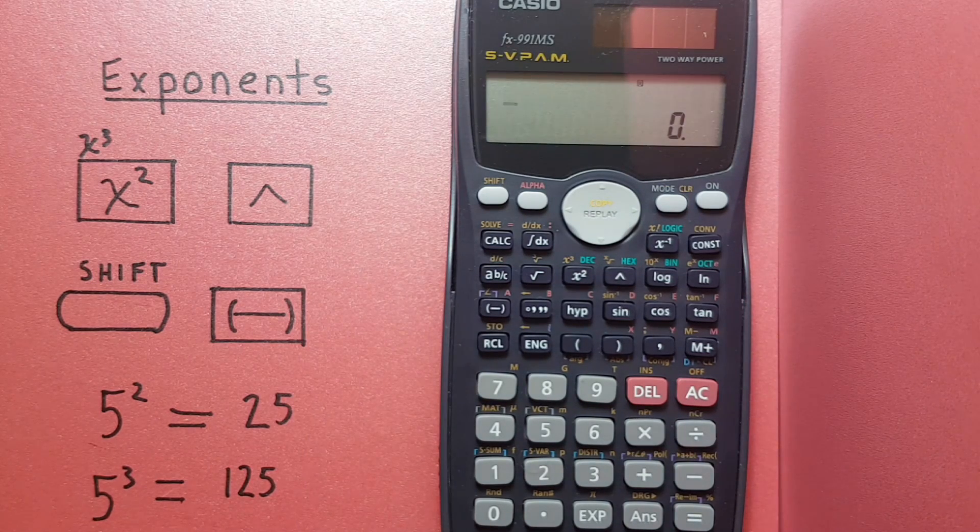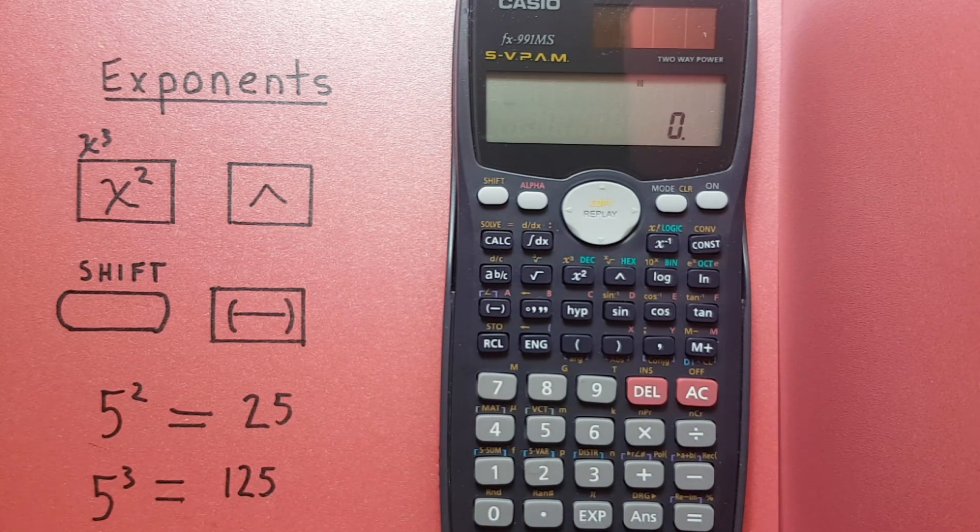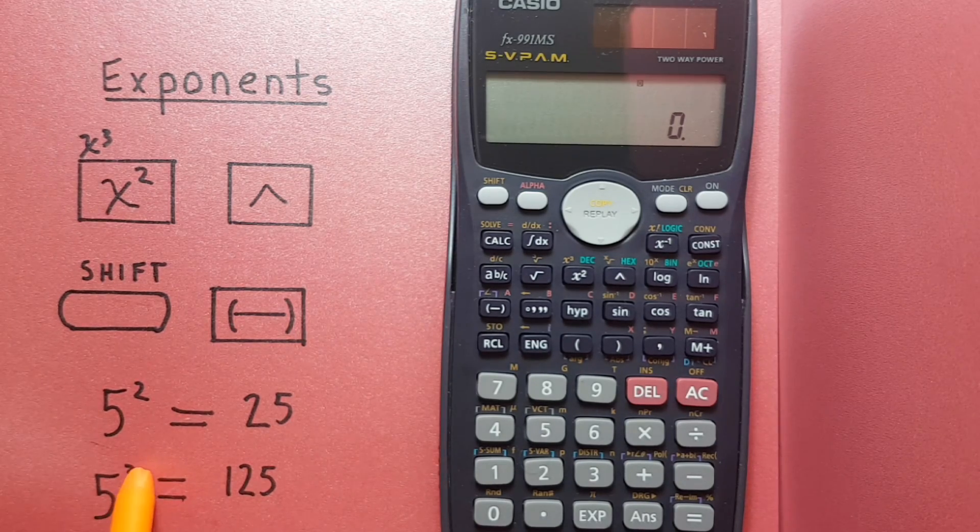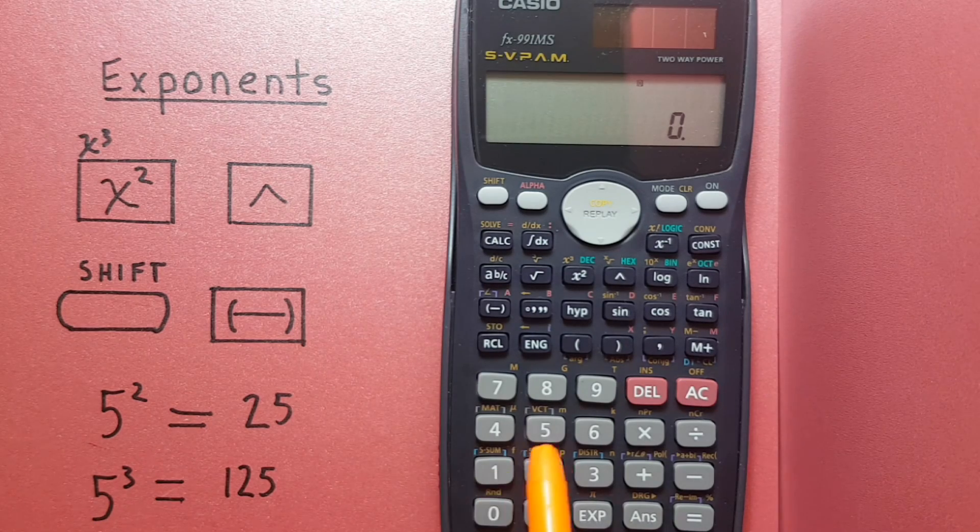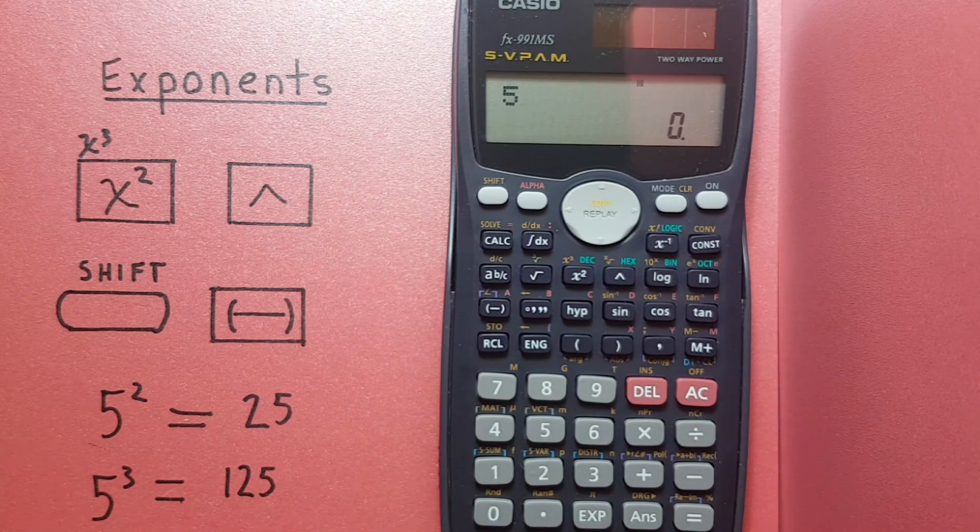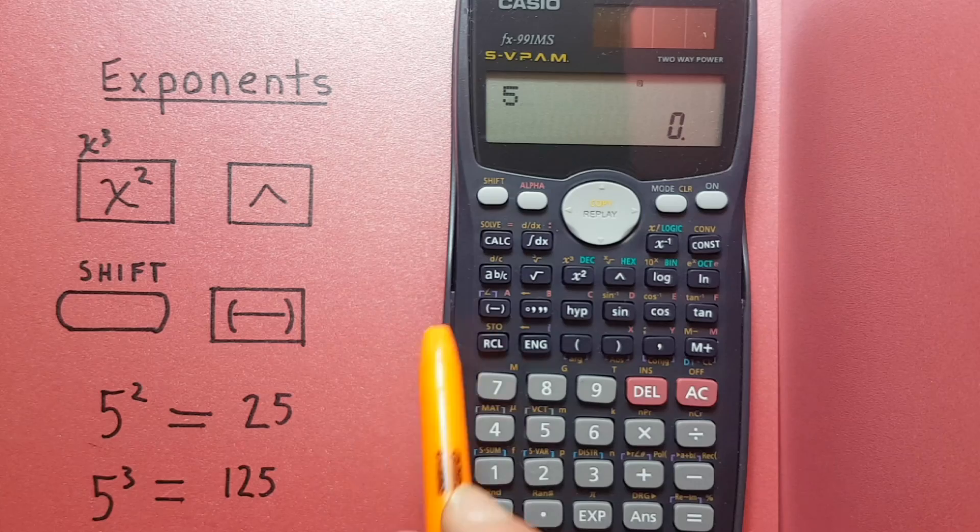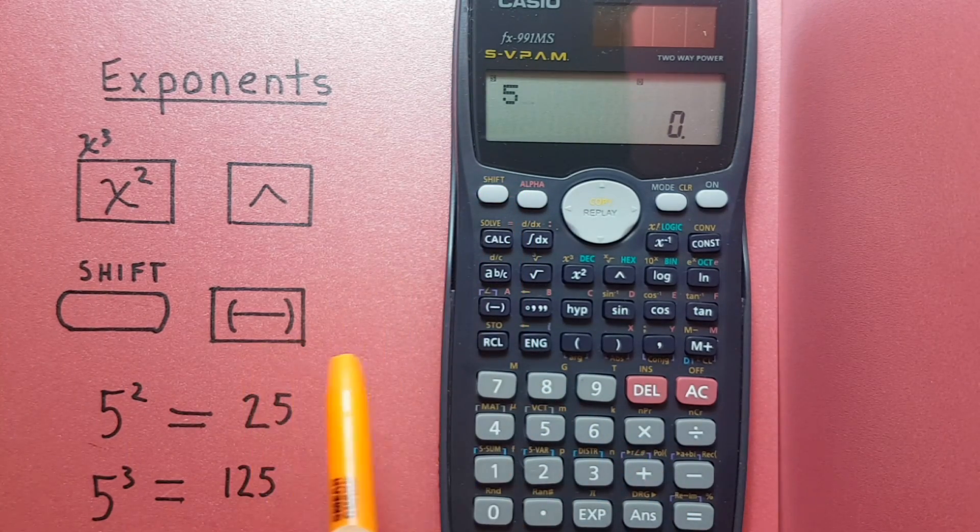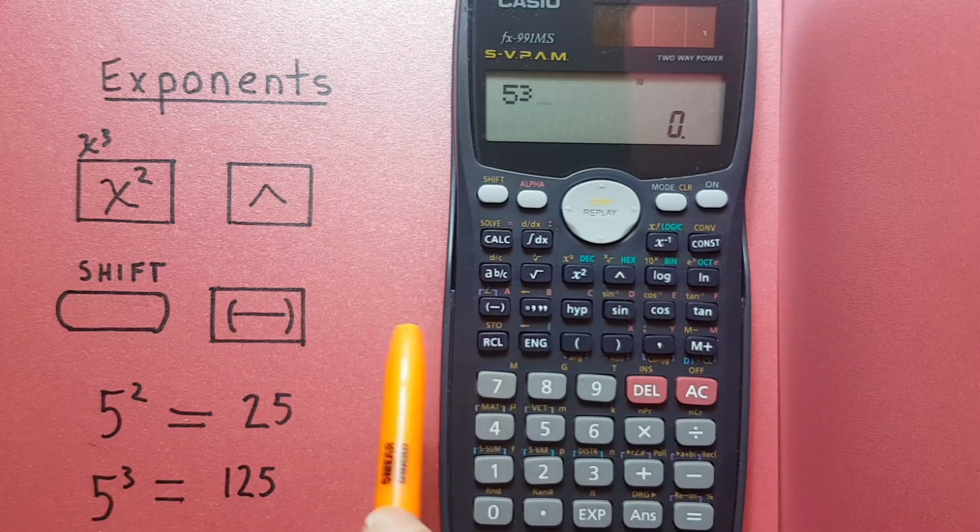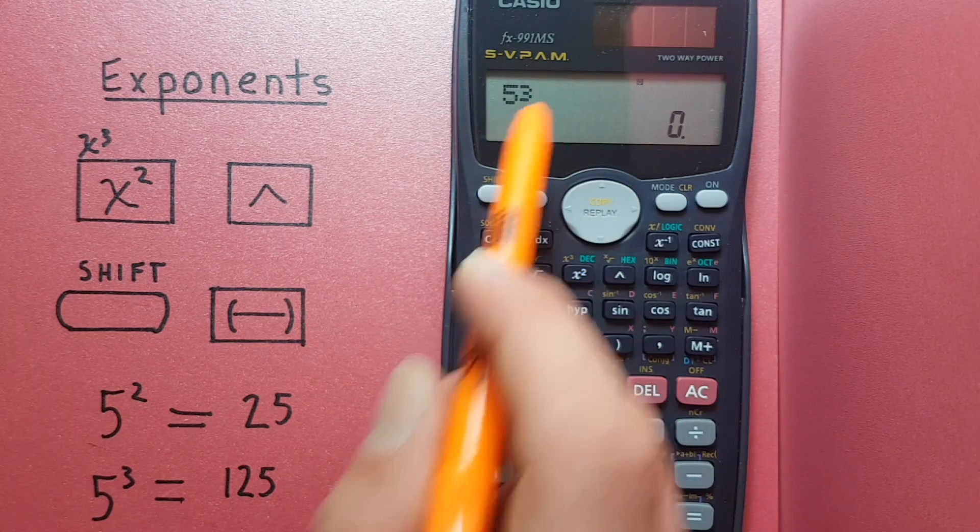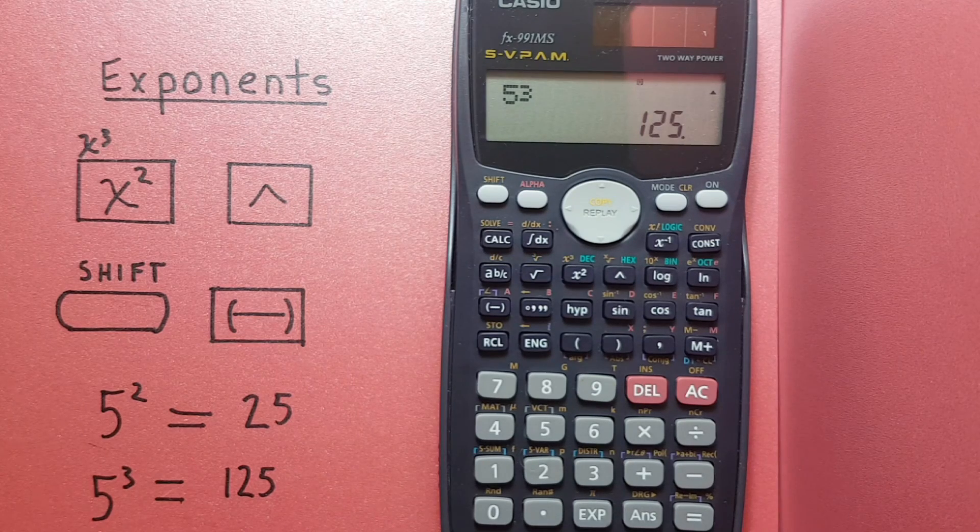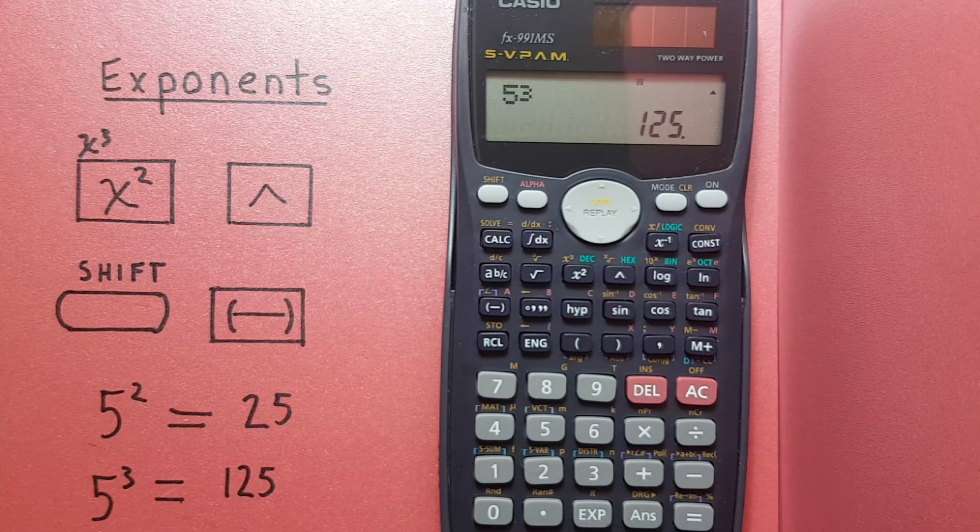We can use the second function of this button combination to get the number cubed. So if we wanted 5 to the power of 3, again we would put 5 on the top of the screen. Then this time hit the shift and then the squared button. We now see it's 5 to the power of 3. We press equals and we get 125, which is correct.